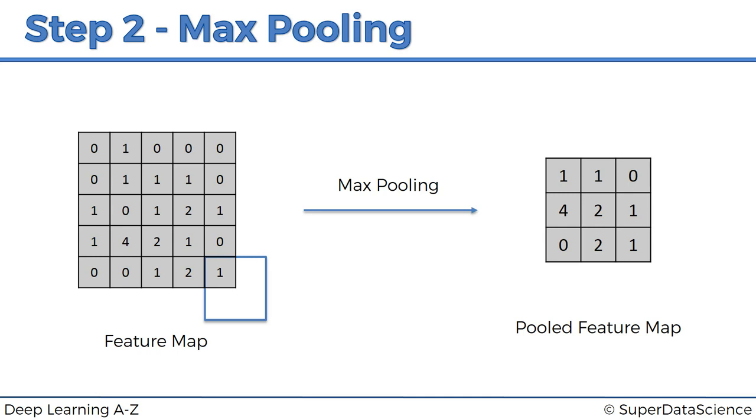And then also, because we are taking the maximum of the values that we have, we are therefore accounting for any distortion. So for instance, two images in which, for example, the cheetah's tears on the eyes are, in one image, they're a bit to the left, or a bit rotated to the left, and in the other one, they're how they're supposed to be, or if we take one as the basis, and in the other one, they're a bit rotated to the left, the pooled feature will be exactly the same.